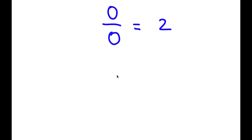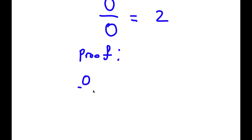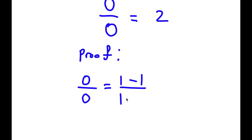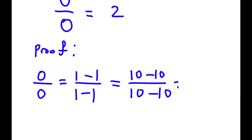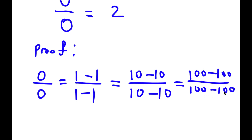In this video I'm going to be proving that 0 divided by 0 is equal to 2. For my proof, I start with 0 over 0. Now this is the same thing as 1 minus 1 over 1 minus 1, because 0 is the same thing as 1 minus 1. This is the same thing as 10 minus 10 over 10 minus 10, because 10 minus 10 is again 0. So I have 0 over 0 still. And this is the same thing as 100 minus 100 over 100 minus 100. Again, 100 minus 100 is 0, so it's 0 over 0 still.